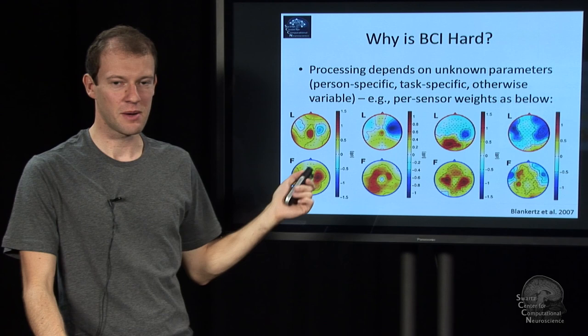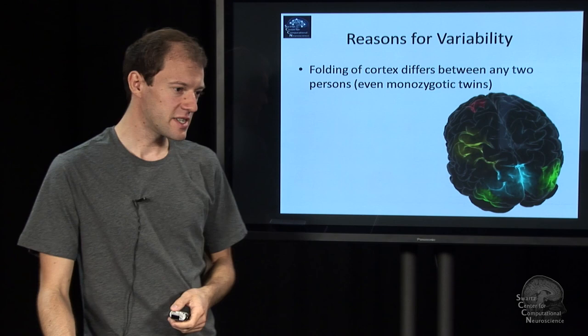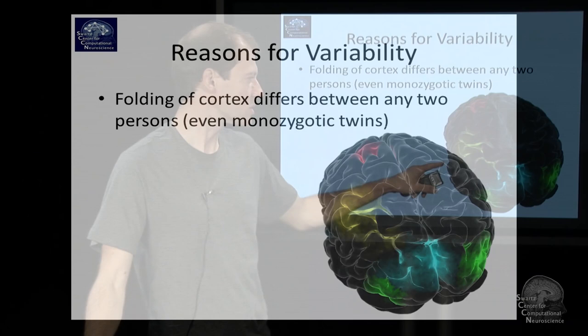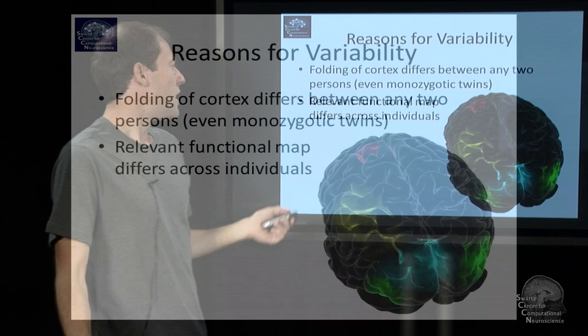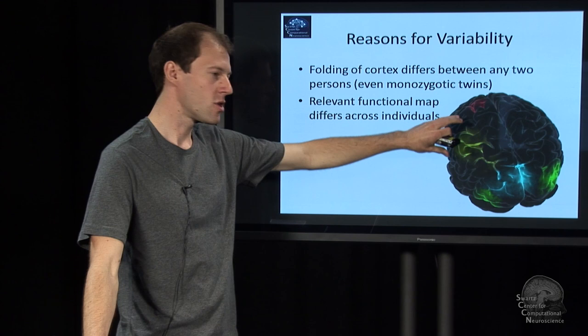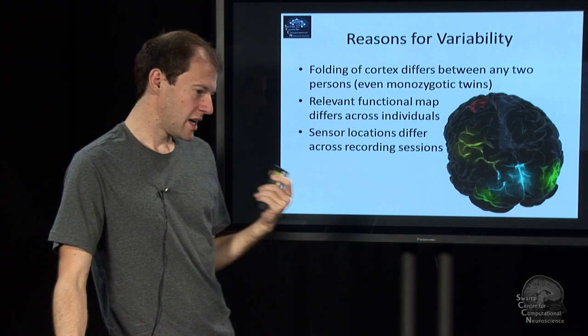And there's reasons for that variability. One is that the cortex is folded differently for every person and so the signals project into different areas. That's even for twins who are monozygotic, quite surprisingly, like a fingerprint. The functional map or allocation might be different for people or it might be larger in some and smaller in others. And on every recording session, your sensors are placed slightly differently, which gives you variability. So this is session to session.